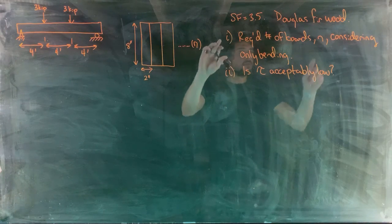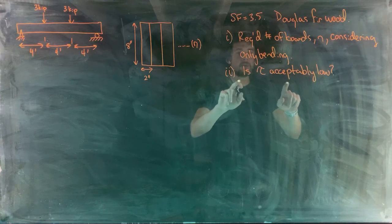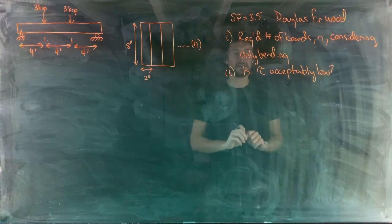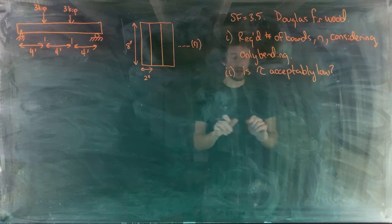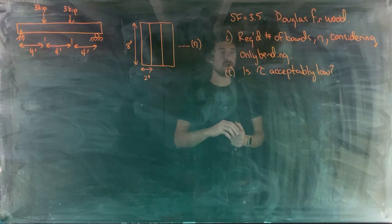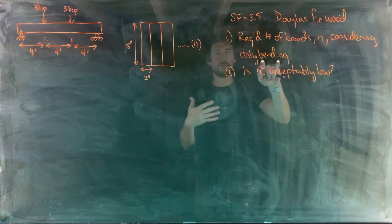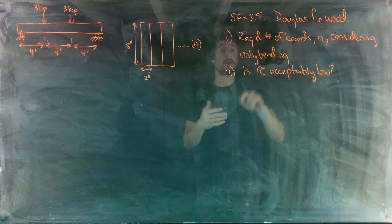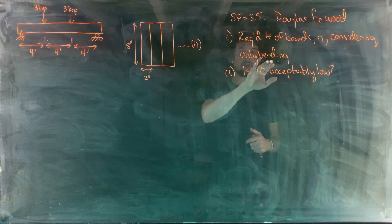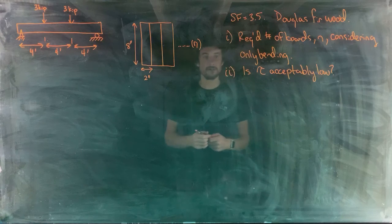We're going to design the cross section of the beam considering bending stress, and then check that for that beam design the shear stress is acceptably low. In general, bending stress tends to be the requirement you need to pay more attention to when designing beams — you usually design for bending and then check shear.